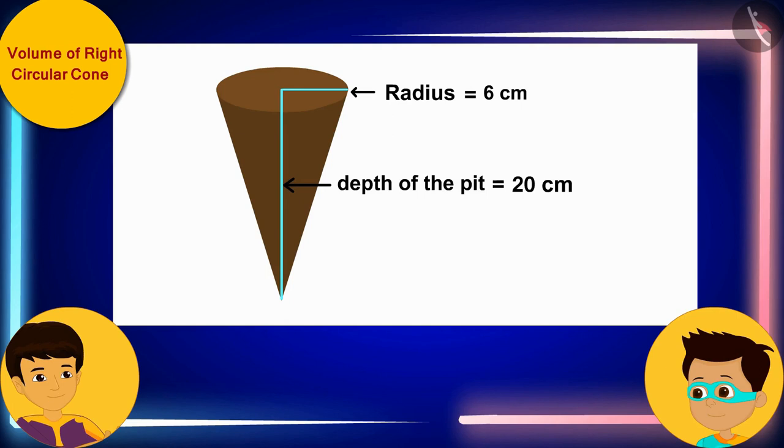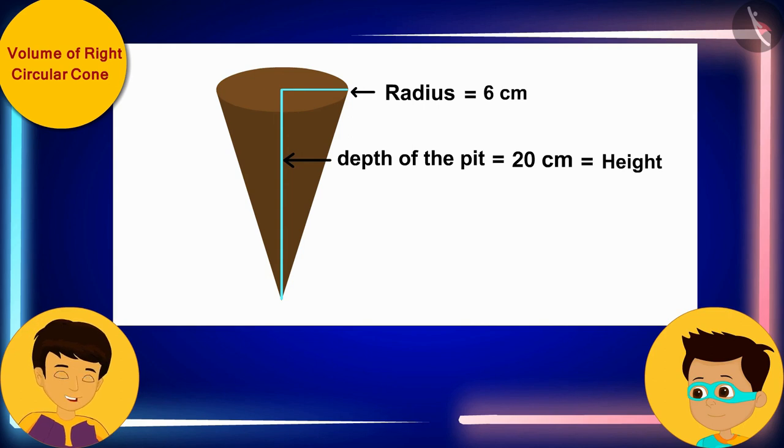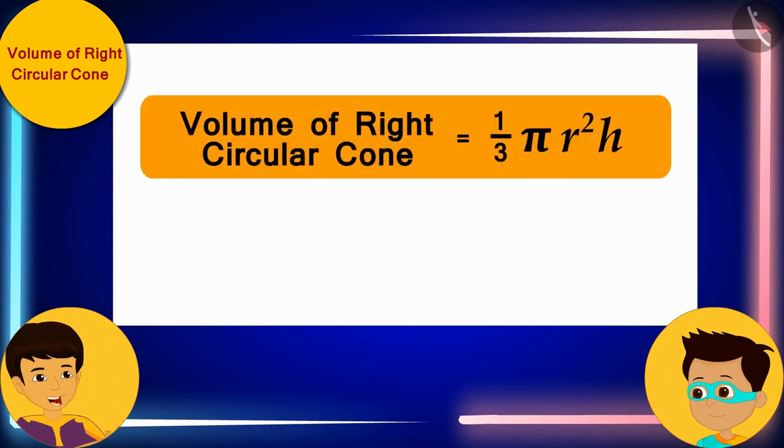The depth is equal to the height of this conical pit. Because the height is perpendicular to its base, we can say that this pit is a right circular cone.